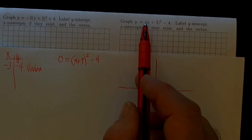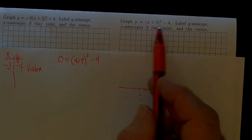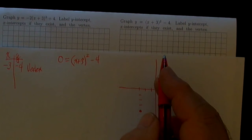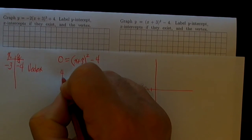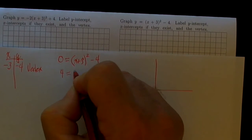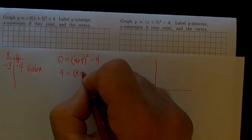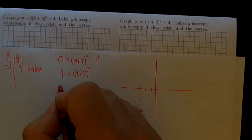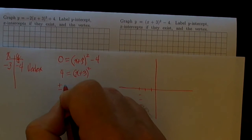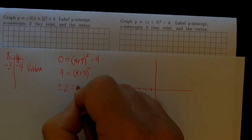Just start getting the x by itself: add 4 to both sides. This will be (x + 3)² = 4. Take the square root of both sides. This side will become plus or minus 2, and this will be x plus 3.